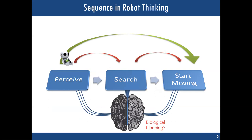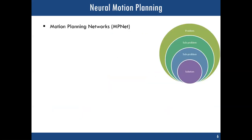Inspired by the biological planning perspective, we proposed a new class of algorithms to address the limitations of existing methods. We named this class neural motion planning, and proposed Motion Planning Networks — MPNet — in that new area of research. Many people think of MPNet as just a couple of neural networks, but it is not. It is a recursive planning algorithm that uses neural networks to decompose a problem into a sequence of sub-problems and find their solutions sequentially until you have an end-to-end motion trajectory.